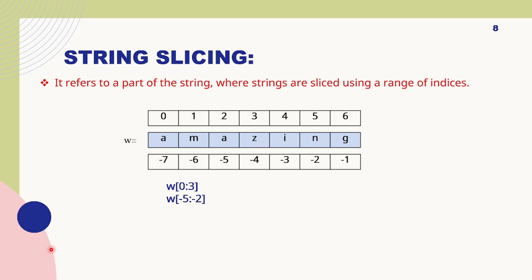Next is string slicing — just like you slice fruits at home. For this you need to understand indexing. Starting from the left side, indexing begins at zero: 0 for 'a', 1 for 'm', 2 for 'a', 3 for 'z', and so on. But from the right side we start at minus one — not zero. Many students get confused here. So: -1 for 'g', -2 for 'n', -3 for 'i', and so on.